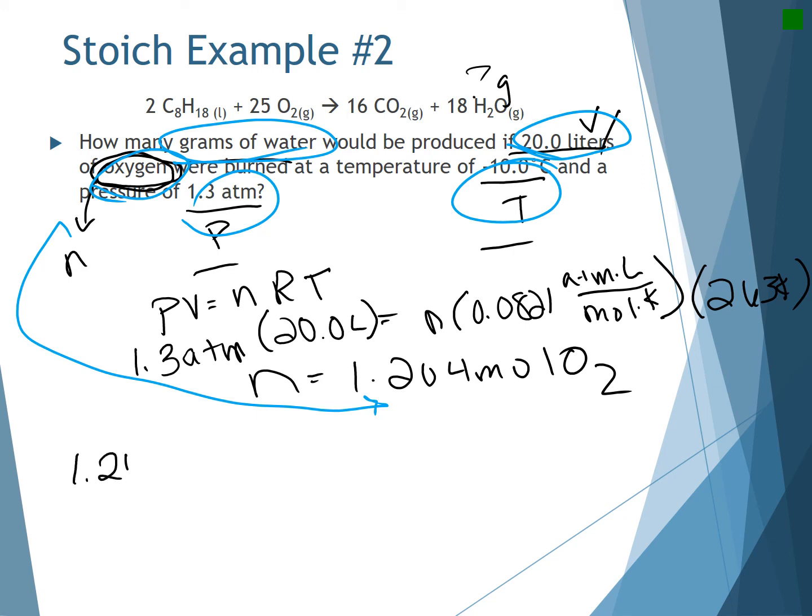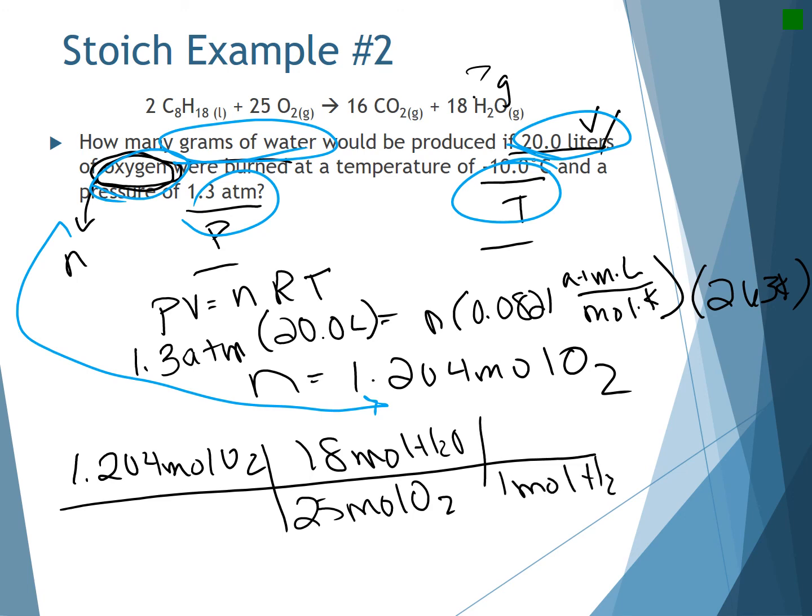So I've got 1.204 moles of oxygen. Now I need to convert from moles of oxygen to moles of water. So it's 25 moles of oxygen for every 18 moles of water. Now I can go from moles of water to grams of water. And when I solve that, I get 15.6 grams.